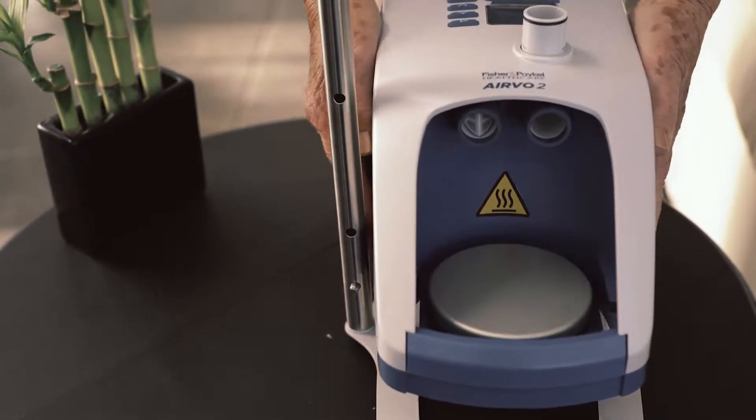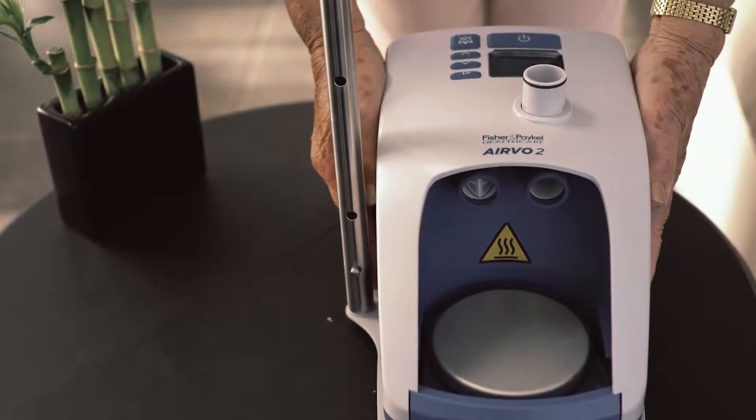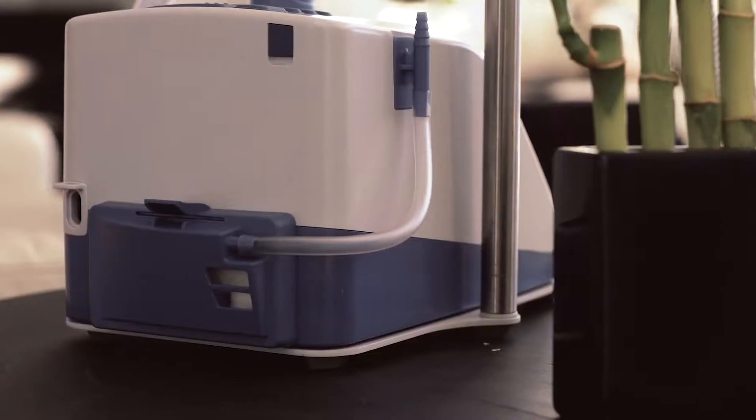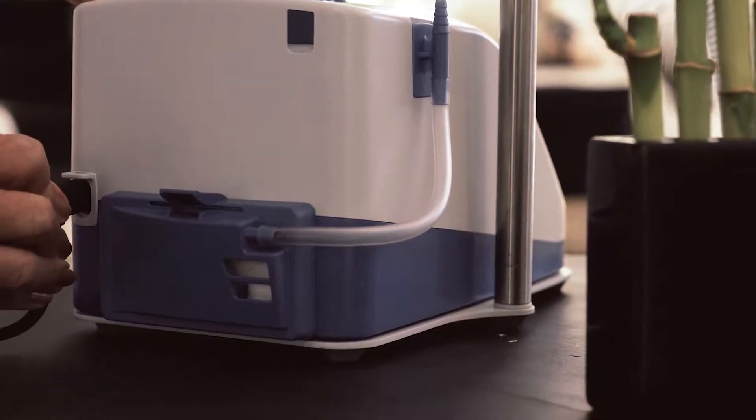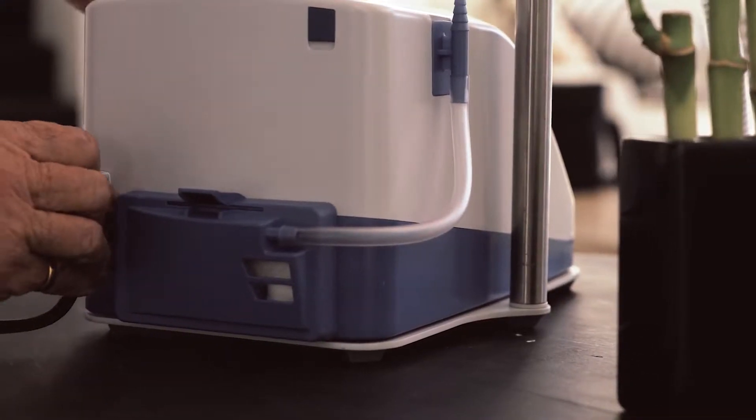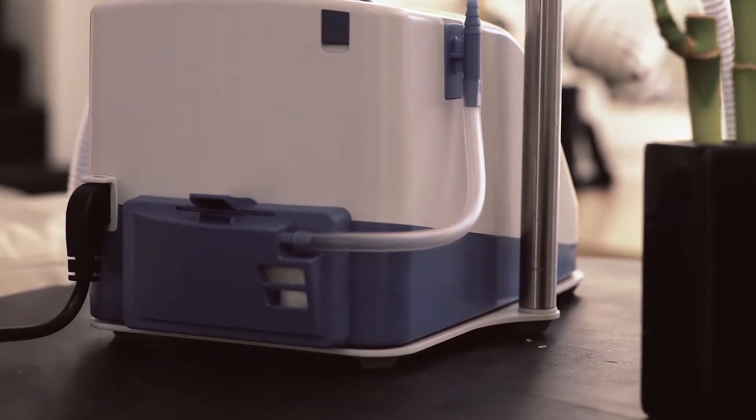Before your therapy can begin, place the MyEvo2 on a flat surface below head height. Position the device so the power cord connection to the power supply is easily accessible and able to be disconnected.